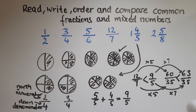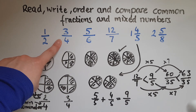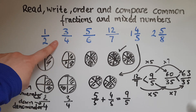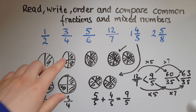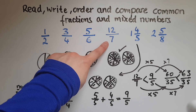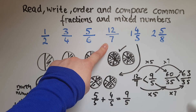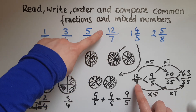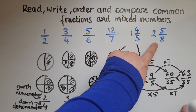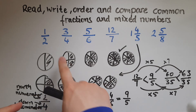So putting them all in order: one half was the smallest. Then three quarters. Then five sixths, because we compared it with three quarters and five sixths was bigger. Then twelve sevenths, because it represents more than a whole. Then one and four fifths — which as nine fifths was bigger than twelve sevenths. And finally two and five eighths, because it's the biggest fraction of them all. So we've got them in order. Thank you.